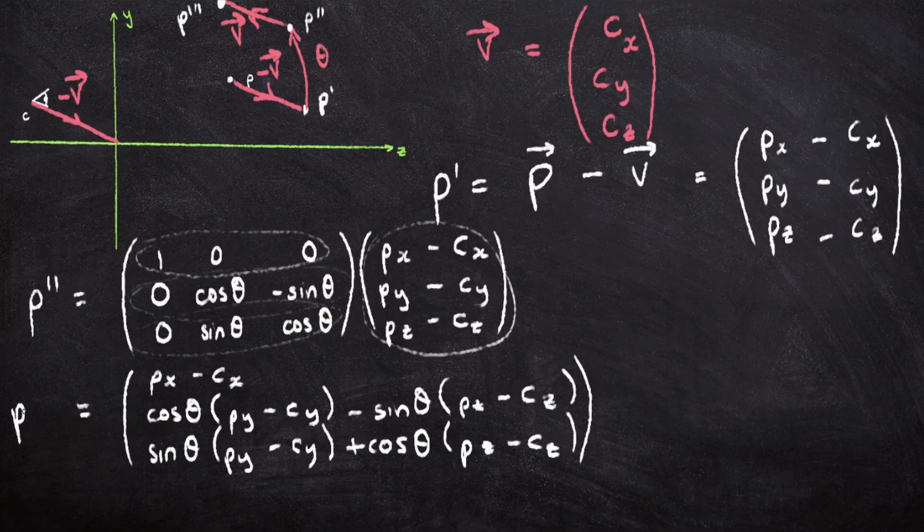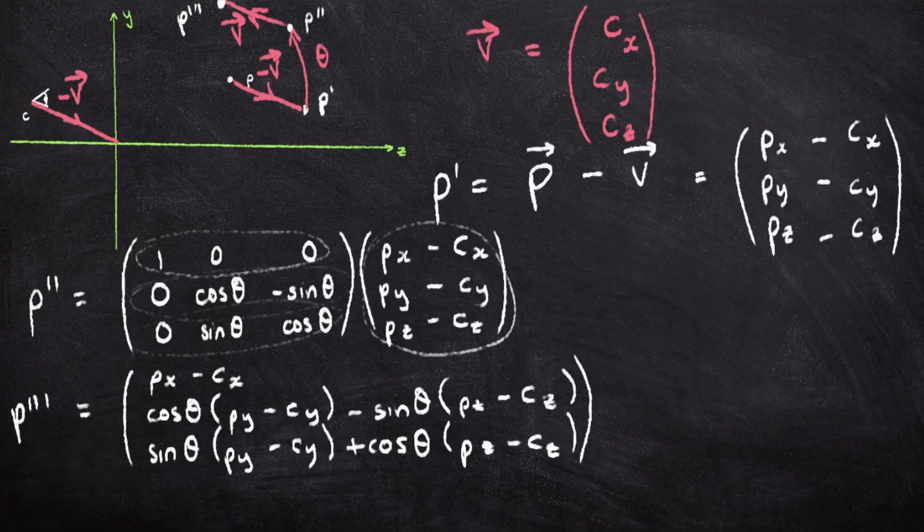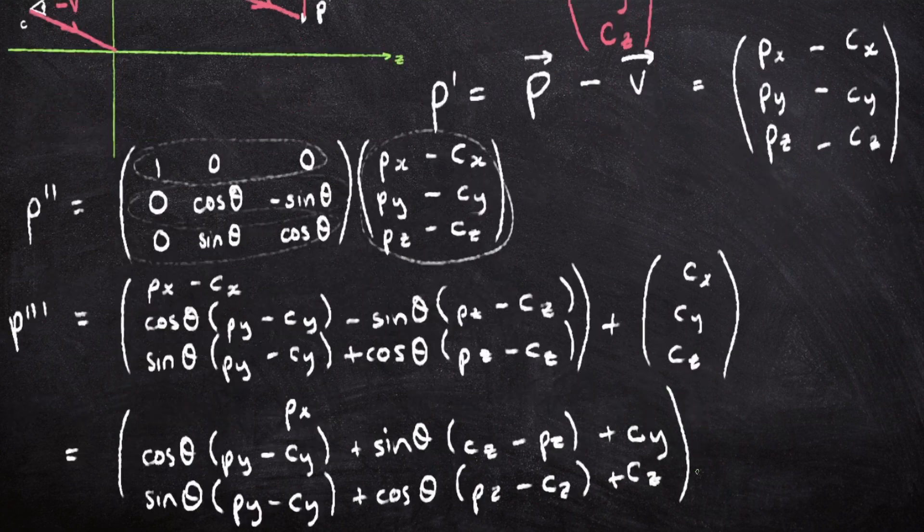Now the last step is to add V back onto it to return the point back to its original position. So at the end, we've got P dash dash plus CX, CY, CZ. And that is our final image.